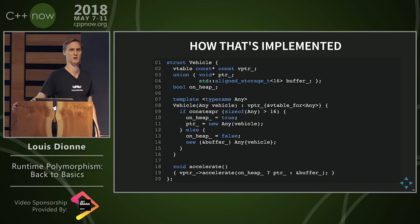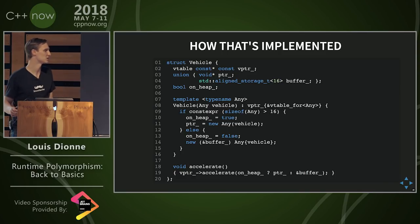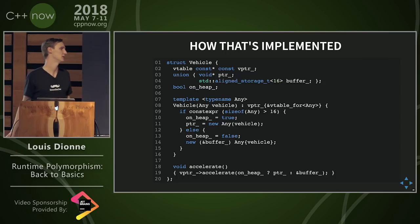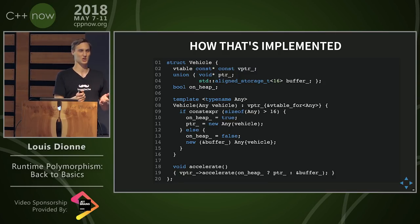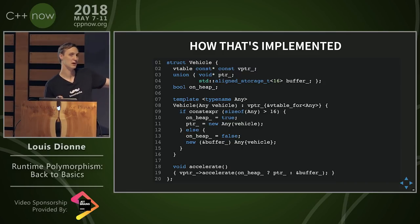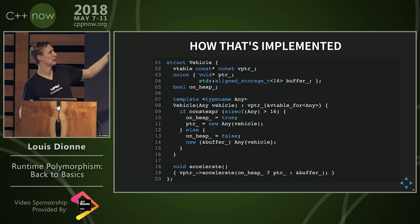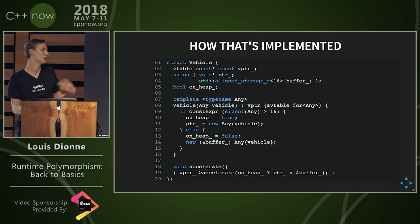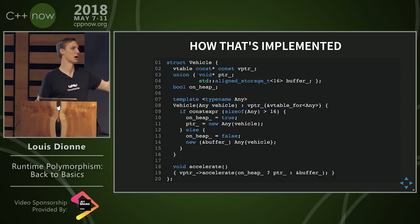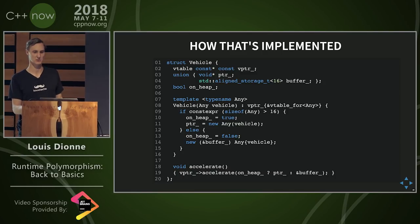The accelerate method always goes to the vtable, then checks whether the object is on the heap. If the bool is true, it uses the pointer member of the union; otherwise it sends the address of the buffer, which is where the placement-newed object is. There was a question about alignment — I'm not checking the alignment of the type here; it's slide code, please don't copy-paste any of this. There's also a subtlety about std::launder.